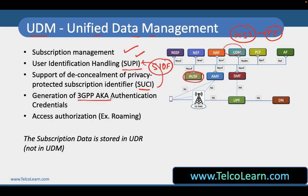By creating some kind of authentication key agreement credentials, UDM also takes care of access authorization during roaming. Whenever you are in a roaming network, every roaming network has to connect to your home network to get information about the user, so that the user can be allowed in that roaming network.